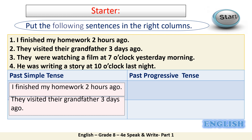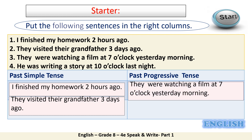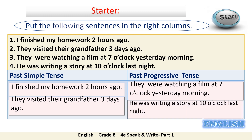The third one: they were watching a film at seven o'clock yesterday morning — of course, it's past progressive. As you see, we've used the auxiliary verb 'were' and added -ing to the main verb 'watch.' The last one: he was writing a story at 10 o'clock last night — it's also past progressive.